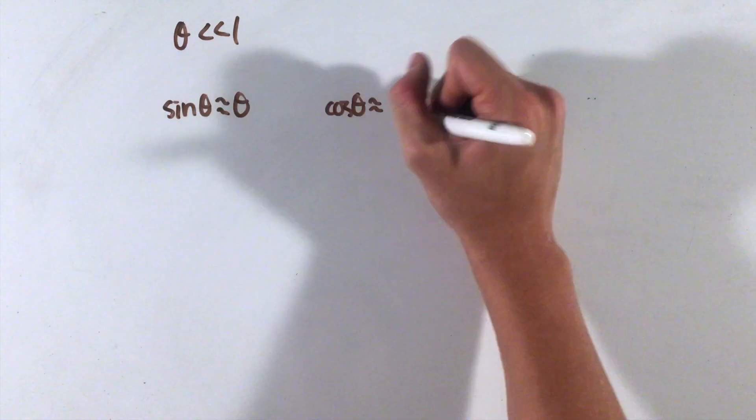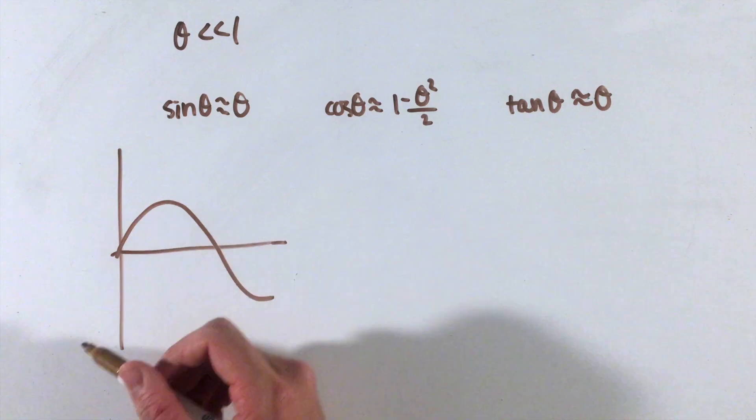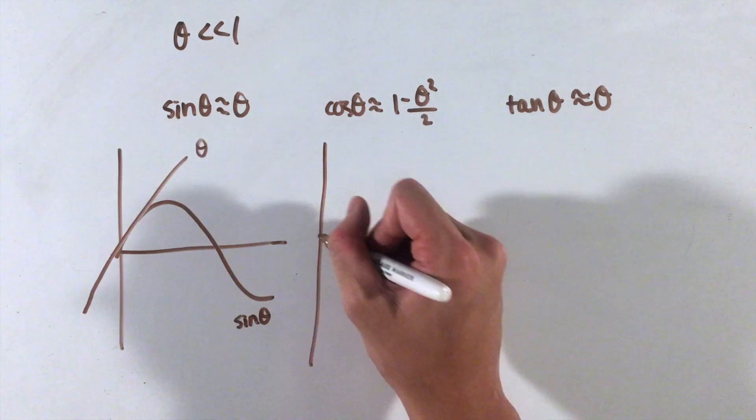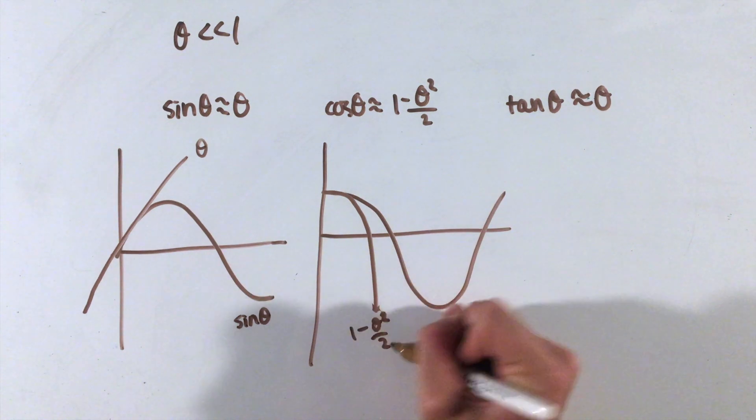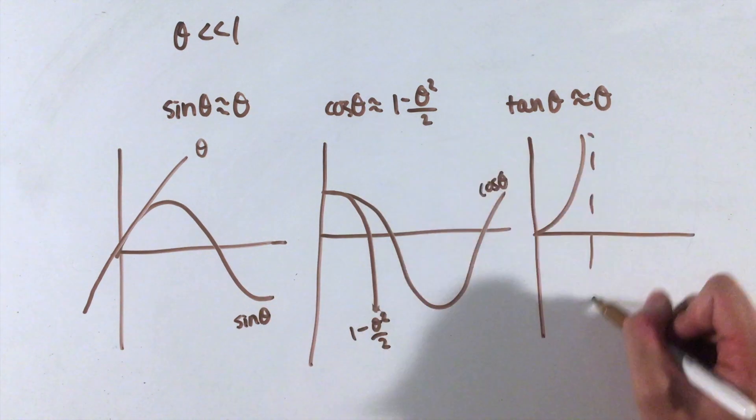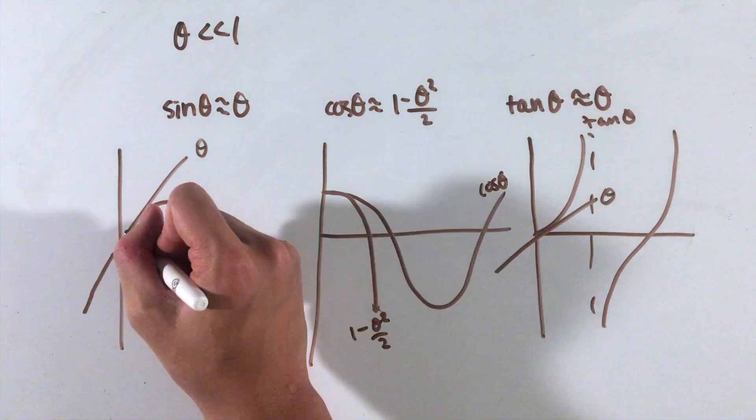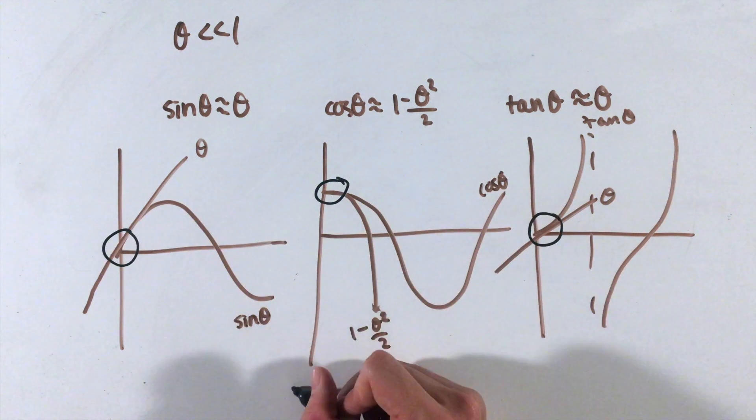Similarly, the trigonometric functions can be simplified for small angles as well. These formulas come from a calculus concept known as McLaurin or Taylor series, but actually can be seen graphically as well. For small angles theta, sine theta is approximated as simply theta, cosine to be 1 minus half theta squared, and tangent to be theta as well.